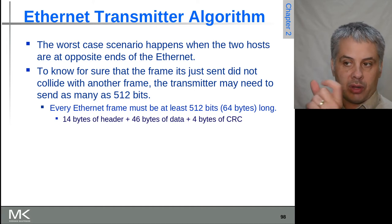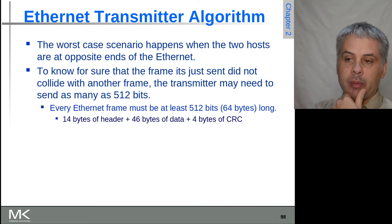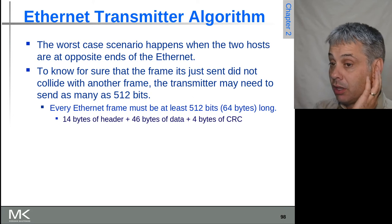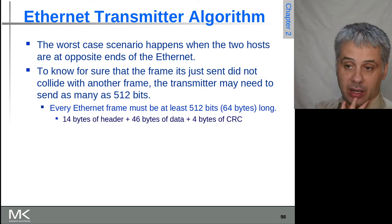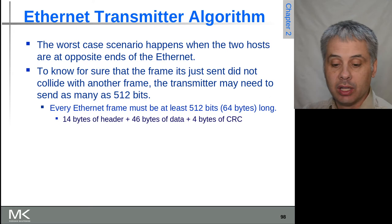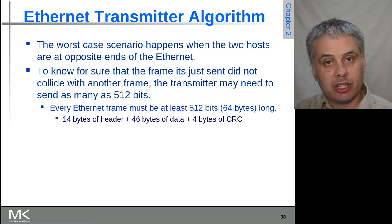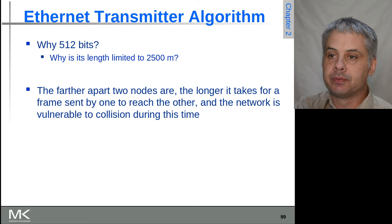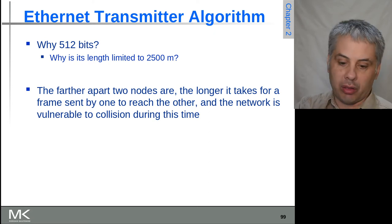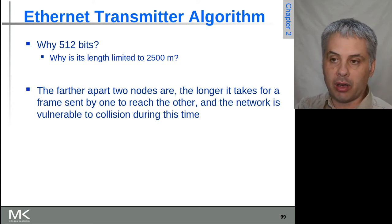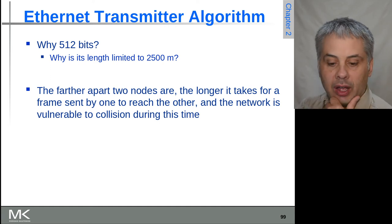Because the worst case scenario is 512 bits, there's actually a requirement that every Ethernet frame has to be at least that long so that collisions can always be detected. So an Ethernet frame must be at least 64 bytes long to guarantee that the collision detection algorithm is able to work, and this is simply because of the distance and the propagation delays that this entails for the signal to travel down that length of wire.